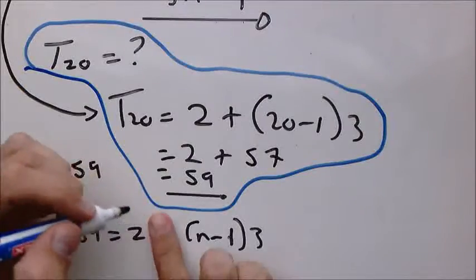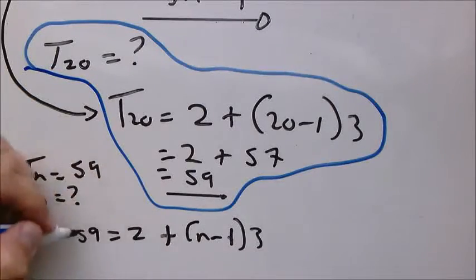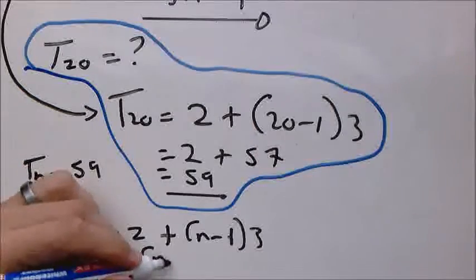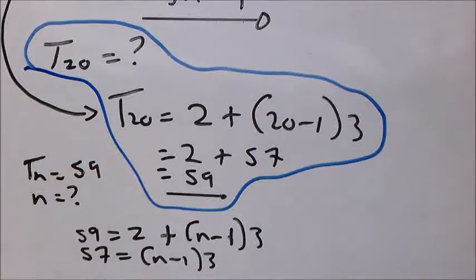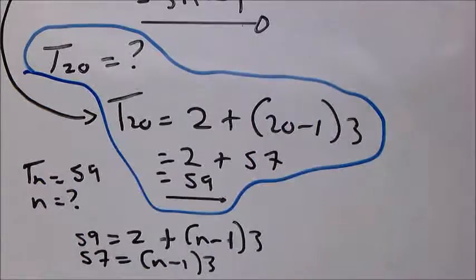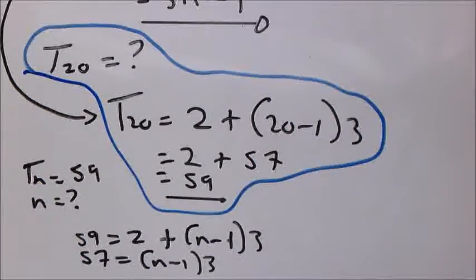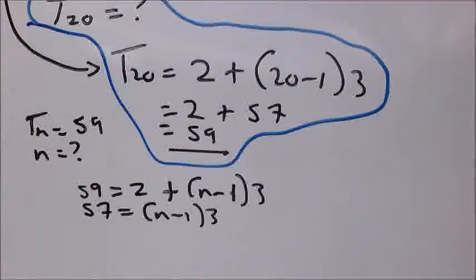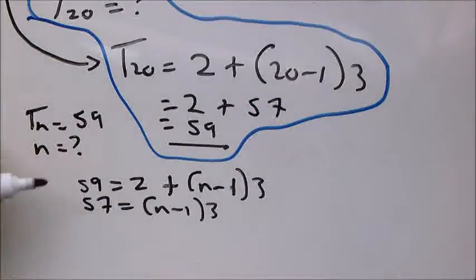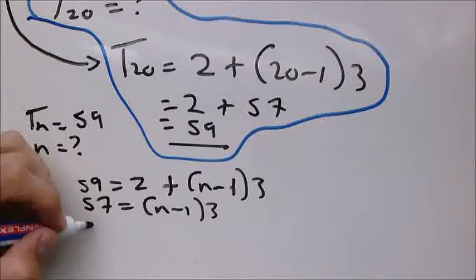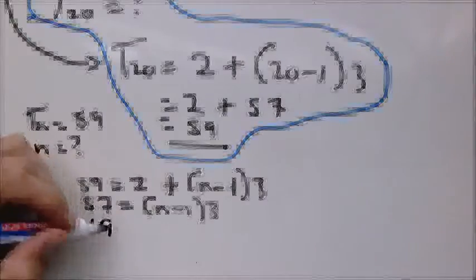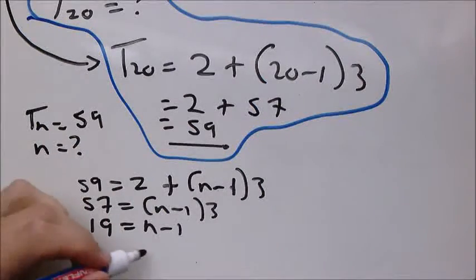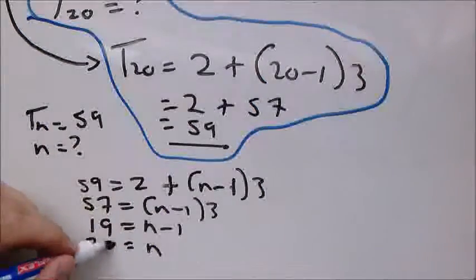So you have 57 equals bracket n minus 1 times 3. Divide by 3 on both sides, which gives you 19 equals n minus 1. Therefore, n equals 20.